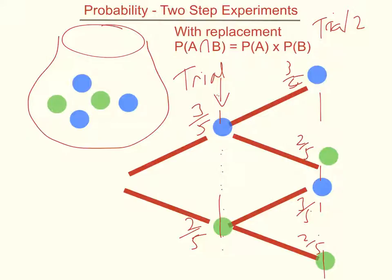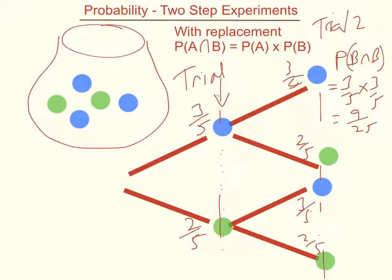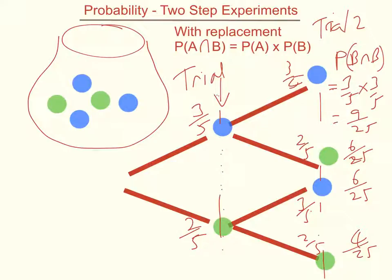The probability of getting a blue and another blue is found by multiplying those two probabilities together. So the probability of blue intersection blue equals three fifths times three fifths, which is nine twenty-fifths. Continuing down the second trial: three fifths times two fifths gives six twenty-fifths for blue then green; two fifths times three fifths gives six twenty-fifths for green then blue; and two fifths times two fifths gives four twenty-fifths for green then green. Adding all of those up gives twenty-five twenty-fifths.